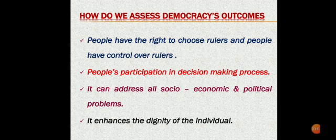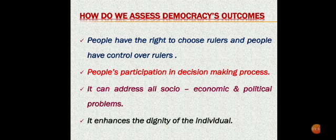How can we assess the democracy outcome? Democracy is a better form of government when compared with dictatorship or any other alternatives because it promotes equality among the citizens, improves the quality of decision making, allows room to correct mistakes, enhances the dignity of the individual, and can address all socio-economic and political problems.